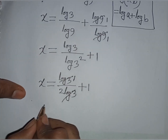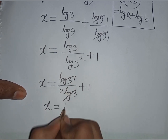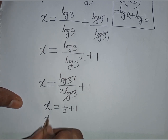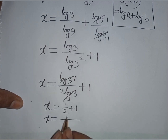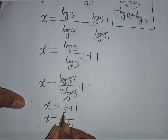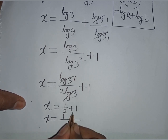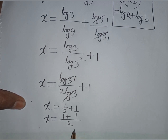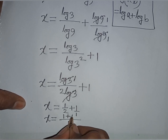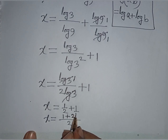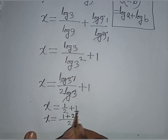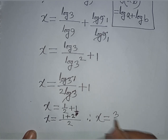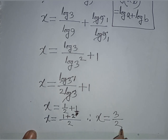So x is equal to 1 over 2 plus 1. The lowest common multiple is 2, so we get 1 plus 2 over 2, which equals 3 over 2. So x equals 3 by 2. This is the final answer from Method 1.